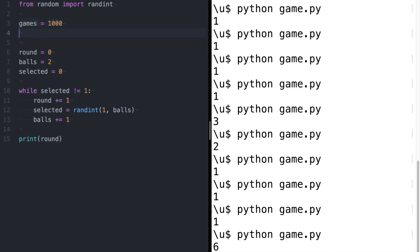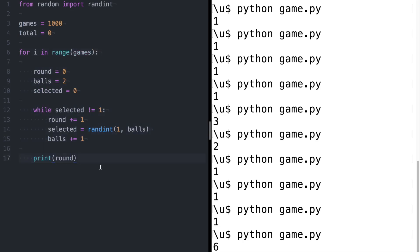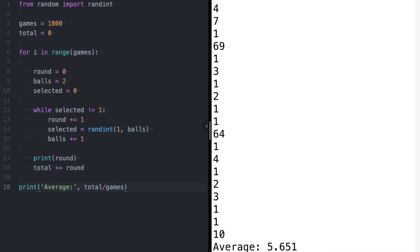Occasionally you get some longer games like 11 rounds, but never infinite games. Okay, let's make the program run a thousand times and then average the number of rounds from those thousand games. The average comes out to around five and a half. Let's now make it run ten thousand games. Now the average is around eight and a half. Let's try a hundred thousand. Now the average is around twelve.